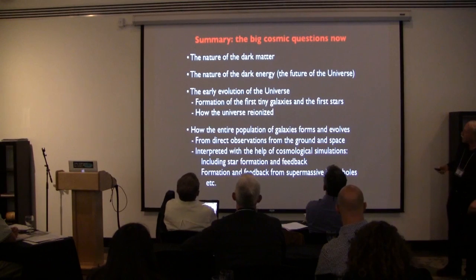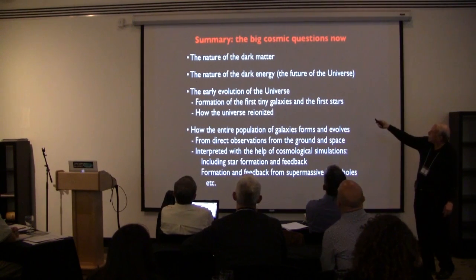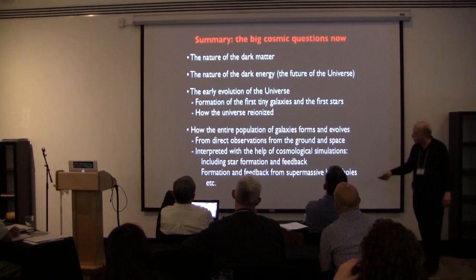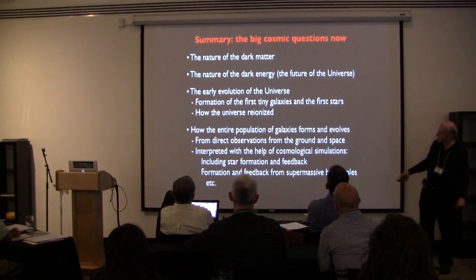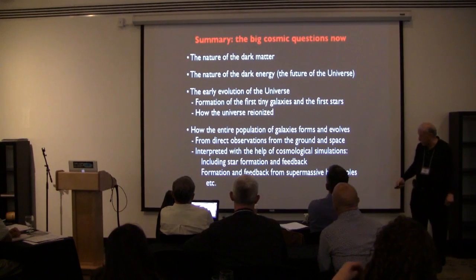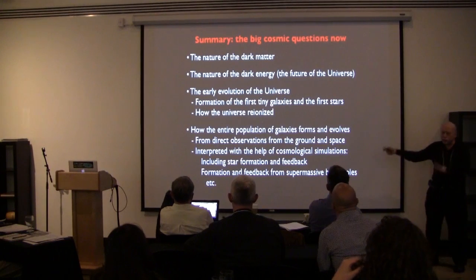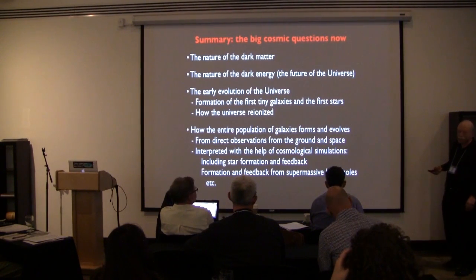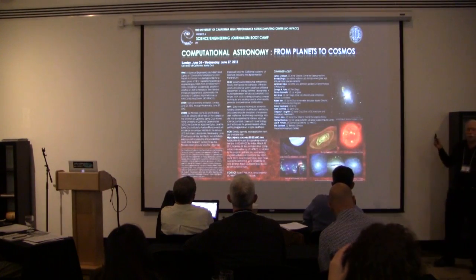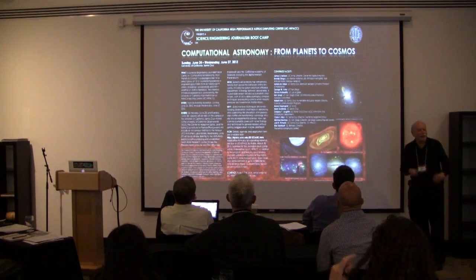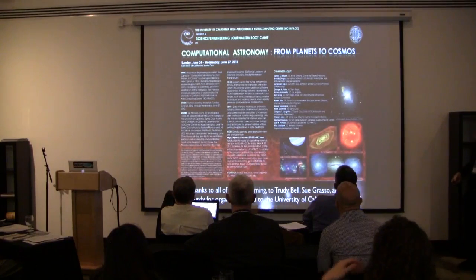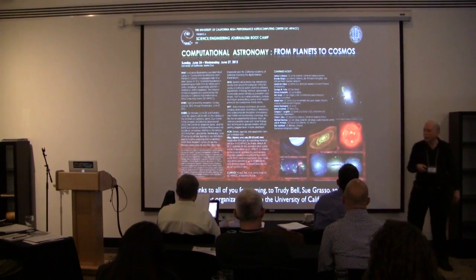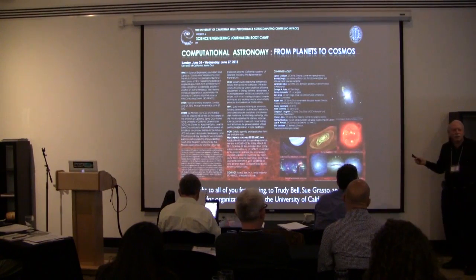To summarize not just this talk but a lot of what you've heard: the big problems we're trying to solve are the nature of dark matter, the nature of dark energy, the early evolution of the universe, the formation of the first tiny galaxies and first stars, how the universe re-ionized, and how the entire population of galaxies forms and evolves. This will keep us busy for quite some time, and will be something you may find interesting to cover. Thank you all for coming. Thanks especially to Trudy Bell, Sue Grasso, and Nina McCurdy for organizing it, and to the University of California for the funding.